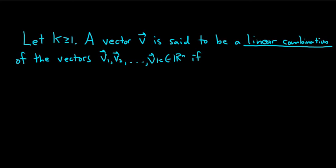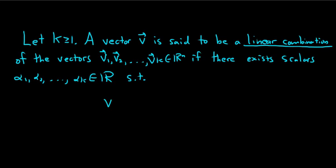If there exists scalars, alpha 1, alpha 2, dot dot dot, alpha k, real numbers, such that - and I was about to say that v is a linear combination of them. That's what we're defining, though. So it's alpha 1 v sub 1 plus dot dot dot plus alpha k v sub k.